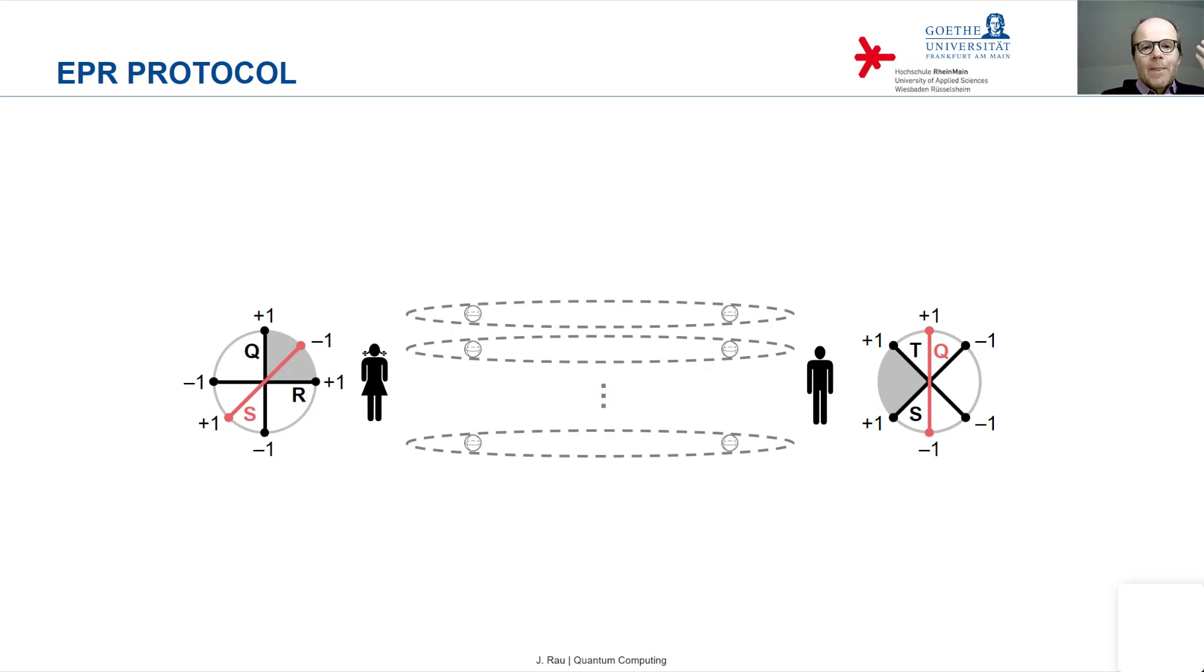If the measurement outcome on one qubit is 0, then the measurement outcome on the other qubit is guaranteed to be 1 and vice versa.